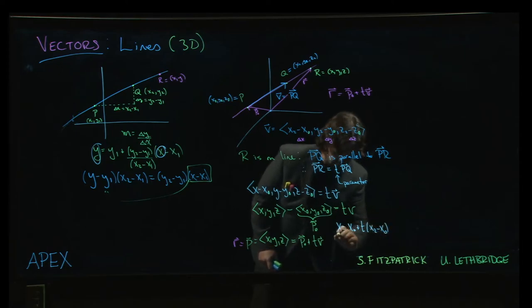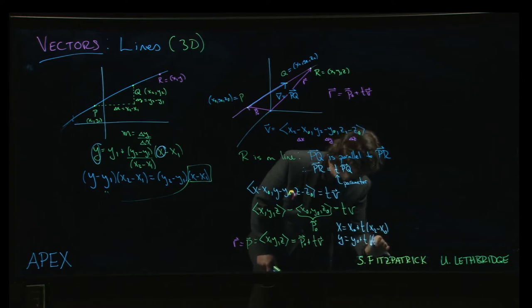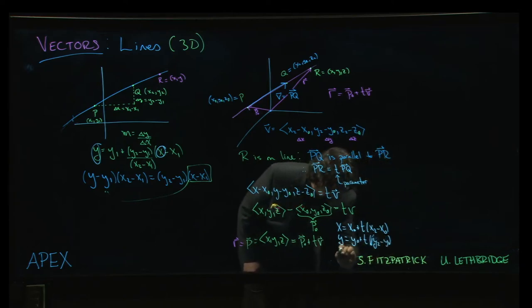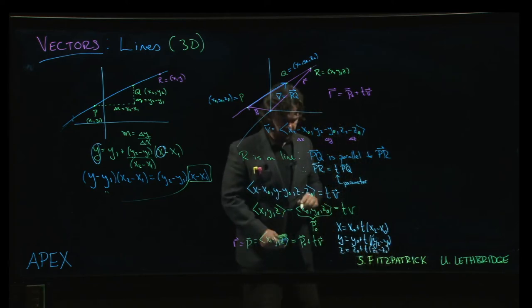But typically that'll just be some number. y is y0 plus t times y2 minus y0, z is z0 plus t times z2 minus z0.